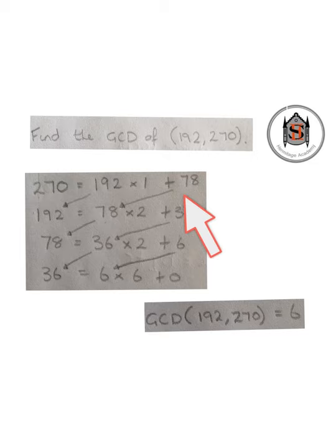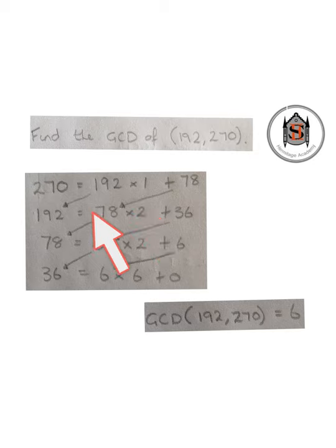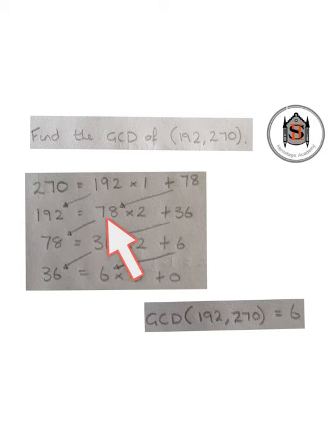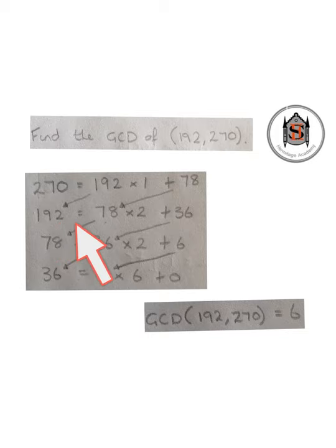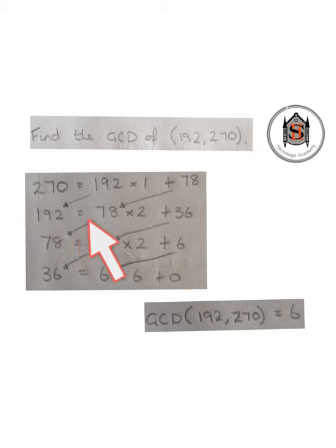To continue this process we bring 192 down to the front and we bring our remainder from this line down into this position on the next line. We want to work out how many times our remainder, which is 78, goes into 192. 78 goes into 192 twice with 36 left over, so we can write this as 192 equals 78 times 2 plus 36.